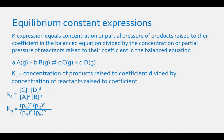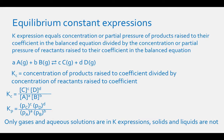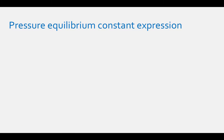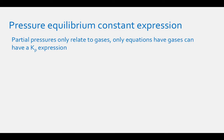Kp equals the partial pressure of C raised to the power C times the partial pressure of D raised to the power D, divided by the partial pressure of A raised to the power A times the partial pressure of B raised to the power B. Remember, only gases and aqueous solutions are in equilibrium constant expressions — pure solids and liquids are not. Partial pressures only relate to gases, so only equations that have gases in them can have a Kp expression.